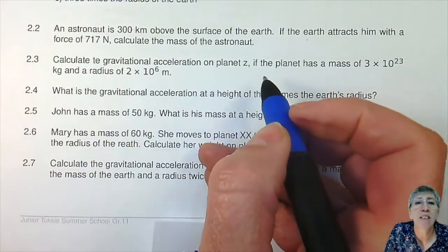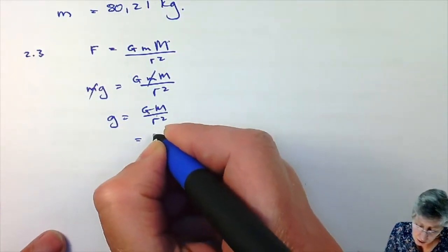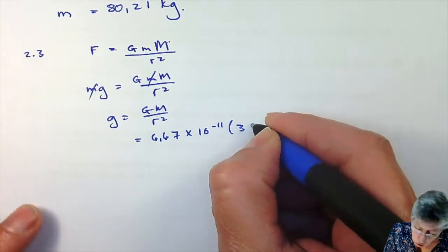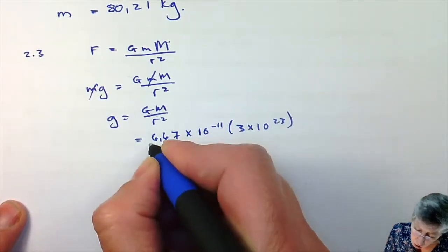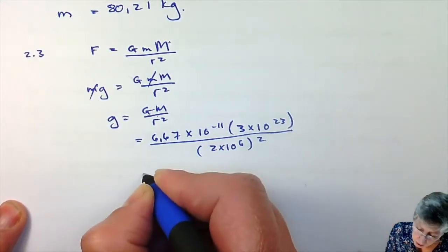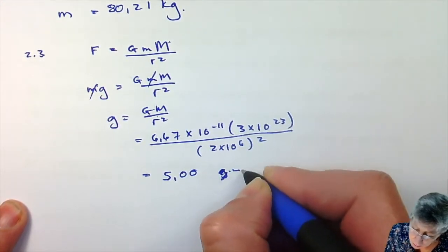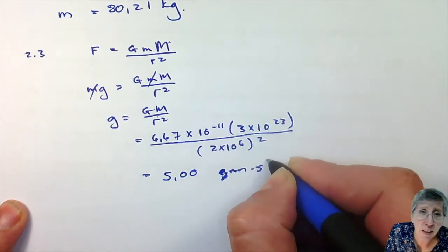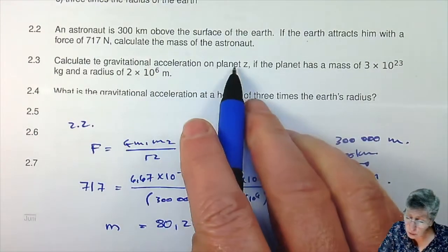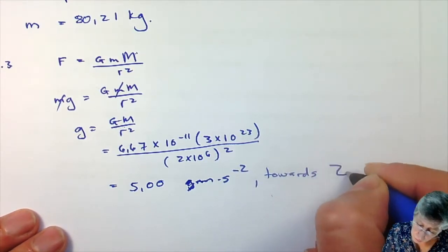Calculate the gravitational acceleration on Planet Z — they give us the mass and the radius, so this is just substitution. g equals 6.67 times 10 to the minus 11, times the mass of 3 times 10 to the 23, divided by the radius of 2 times 10 to the 6, squared. Working it out gives 7.00 meters per second squared towards Z.